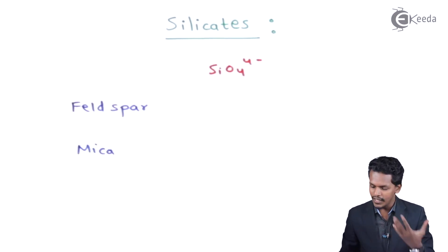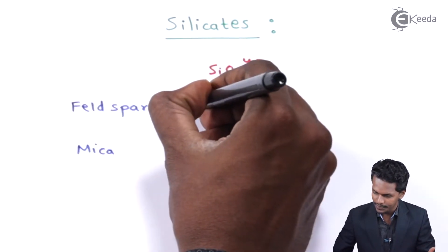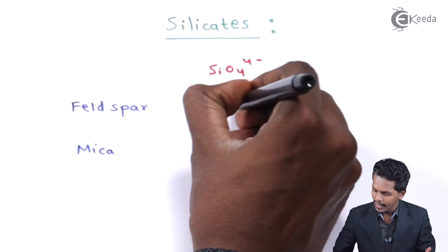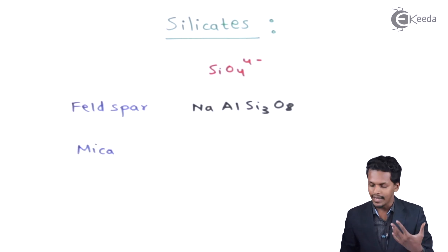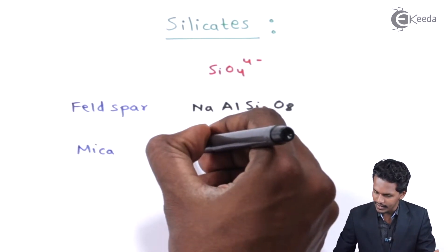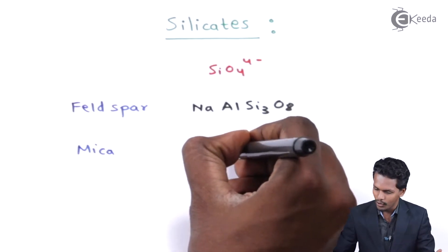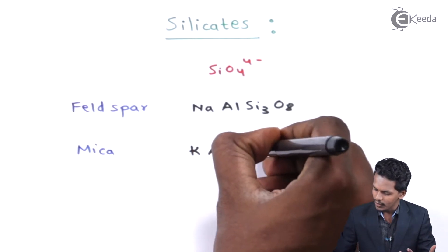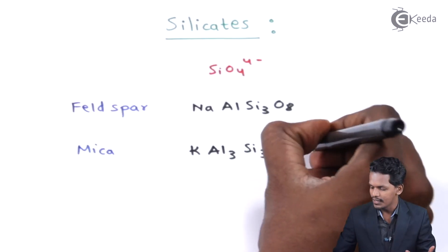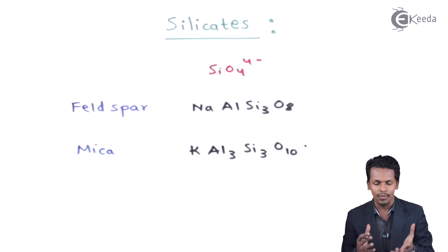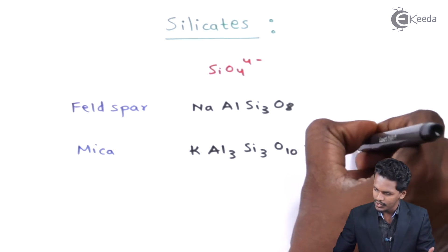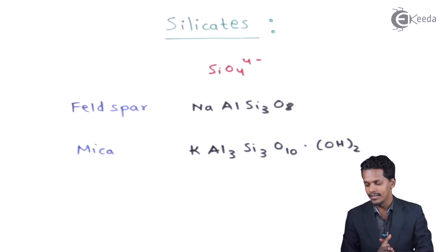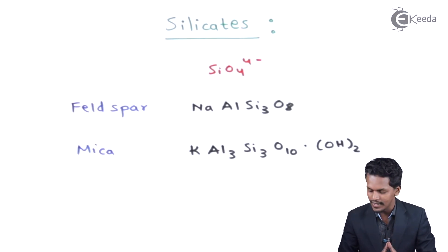If we talk about Feldspar, the molecular formula of Feldspar is NaAlSi3O8. Talking about mica, it consists of potassium, aluminium, silicon, and oxygen, but it is also formed in the form of a hydrate, so we write it with OH⁻.